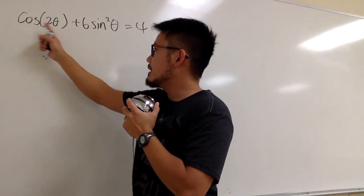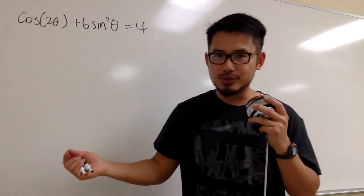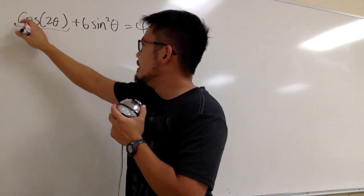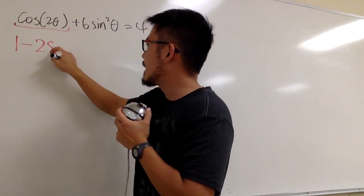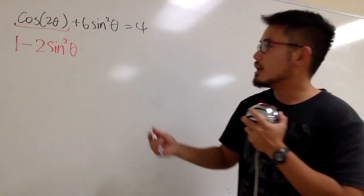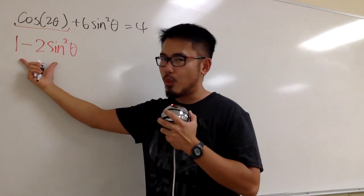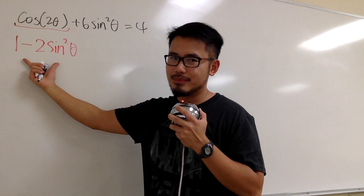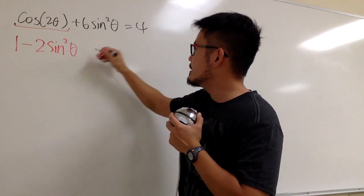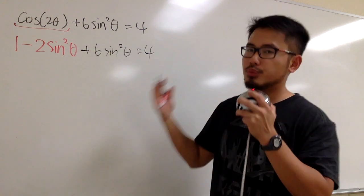We have 2 theta in cosine, and we do have a double angle formula for cosine. Which one should we use though? It has three versions. The version I'm going to use is that cosine of 2 theta is the same as 1 minus 2 sine squared theta. Because we have sine squared theta right here already, I want to use the one that has the like term. Once I bring this down, we can combine like terms and everything will go smoothly from there.